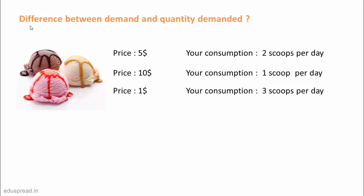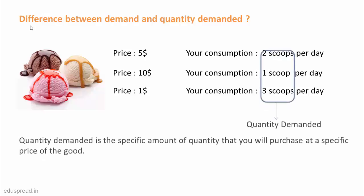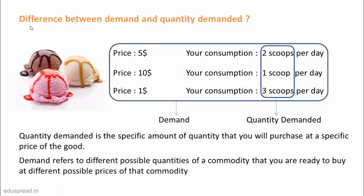Here comes the distinction between quantity demanded and demand. Quantity demanded is the specific amount of quantity that you will purchase at a specific price of the good. So when price of a scoop is $5, your quantity demanded is 2 scoops. When price of a scoop rises to $10, it is your quantity demanded that changes — it decreases to 1 scoop. On the other hand, demand is the entire relation between price and quantity demanded. It refers to different possible quantities of a commodity that you are ready to buy at different possible prices of that commodity.